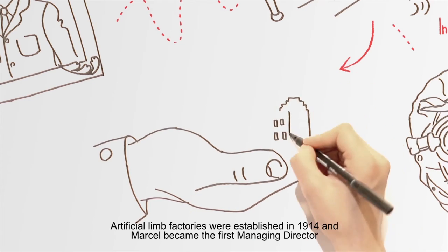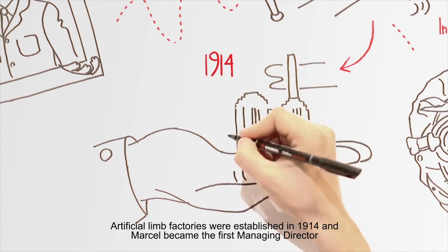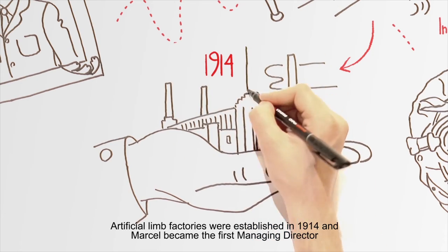Artificial limb factories were established in 1914 and Marcel became the first managing director.